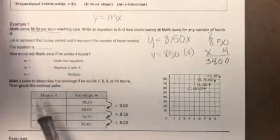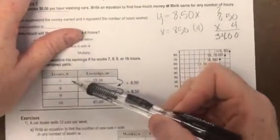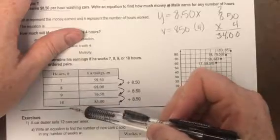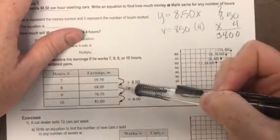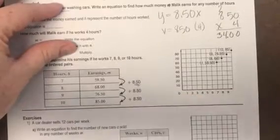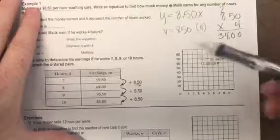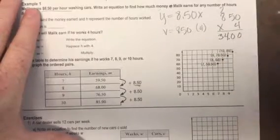So it says make a table to determine his earnings if he works seven, eight, nine, ten hours. So here's his table with seven, eight, nine, ten hours, and it's changing $8.50 a time because it's going up that $8.50 an hour. So here it is in a table.